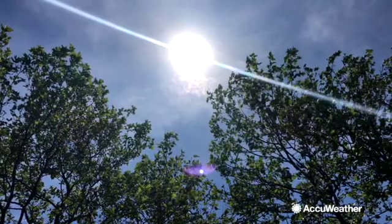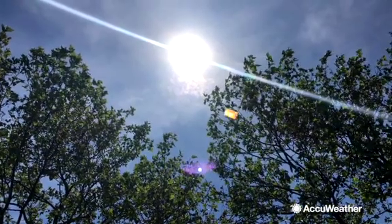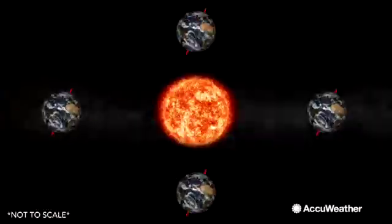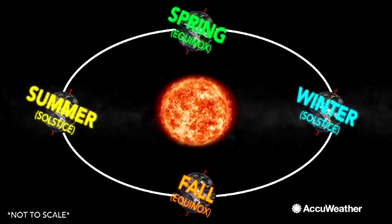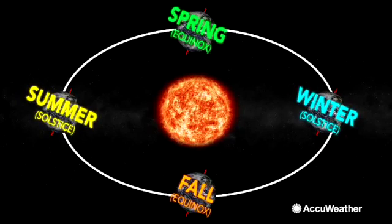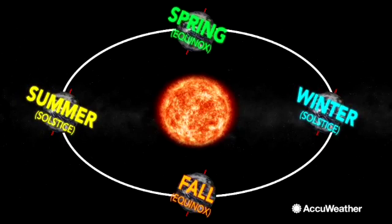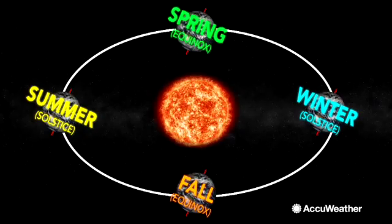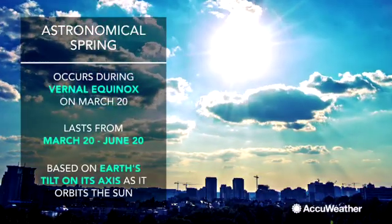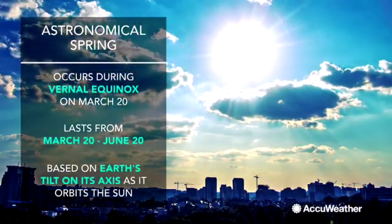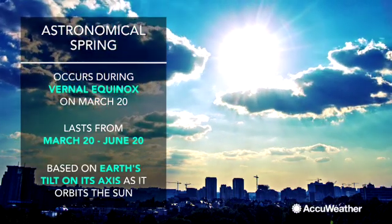Most people are familiar with the astronomical version, which is when spring begins during the vernal equinox on March 20th. An equinox is when Earth's tilt on its axis is neither toward or away from the Sun during its orbit. It happens twice a year. Astronomical spring begins around March 20th and ends around June 20th.